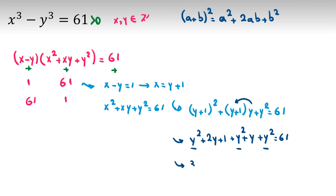Then we have 3y squared plus 3y, and 1 minus 61, which will be negative 60, equals 0. So if we divide both sides by 3, y squared plus y minus 20 equals 0.